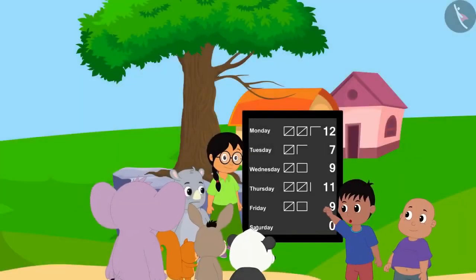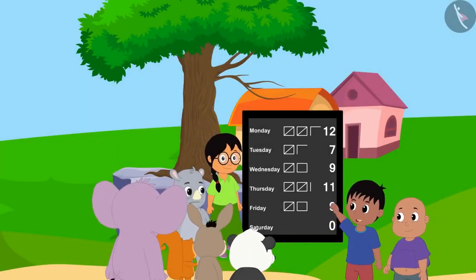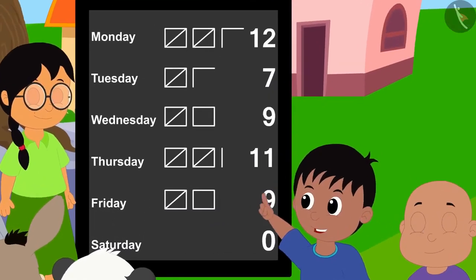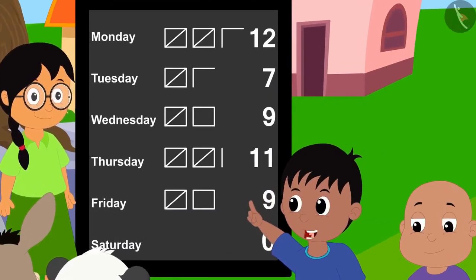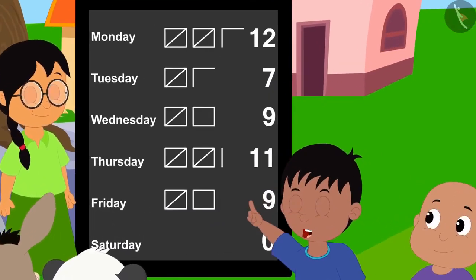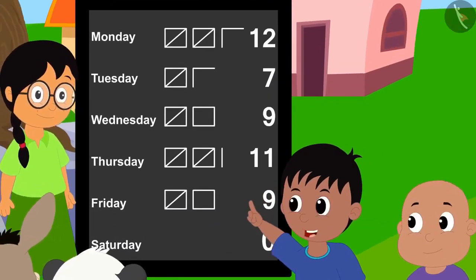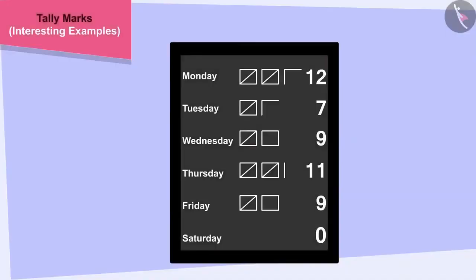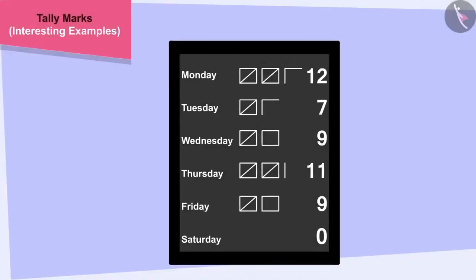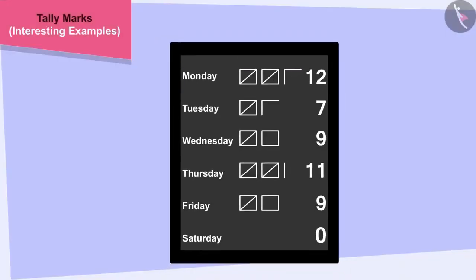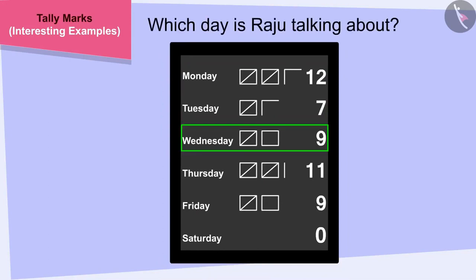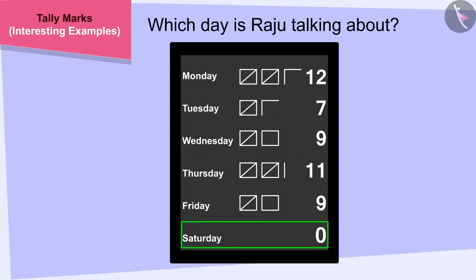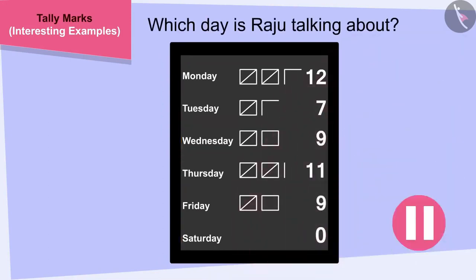Hey, Babalu, look — by the end of this day, we had completed more than half of the total hours, Raju told Babalu. Children, can you tell which day Raju is talking about? If you wish to, you may stop the video and find the answer.